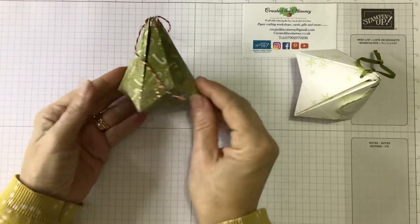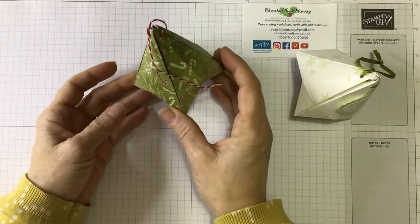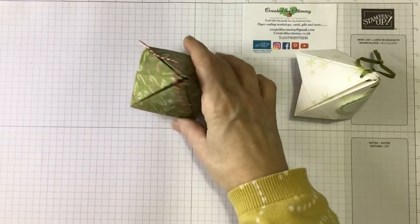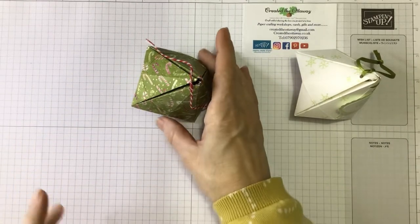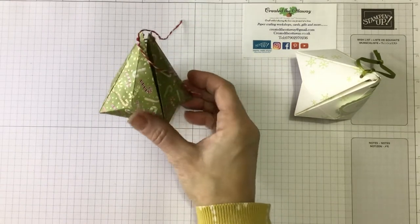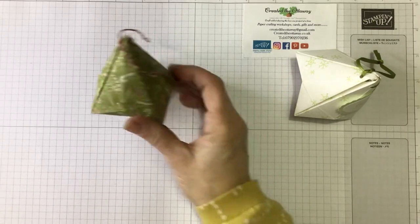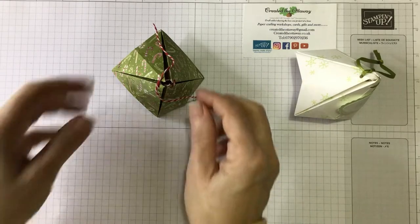Now this would hold a Ferrero Rocher or a Lindt chocolate or something along those lines. You can replicate it any size you want. Just use square paper. So this is 6x6, but if you've done 12x12, 9x9, 8x8, you could have all sorts of different sizes.